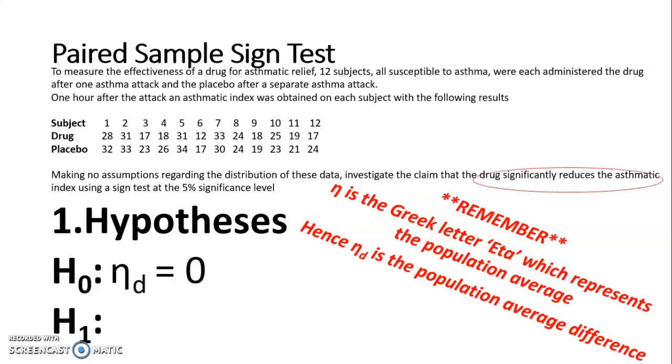And therefore, my alternative to that, because this question is looking for a reduction in the asthmatic index, so that drug is better than the placebo, it reduces that asthmatic index. We're looking for the drug values being less than placebo, and therefore the inequality becomes drug minus placebo less than zero. So my difference is less than zero.